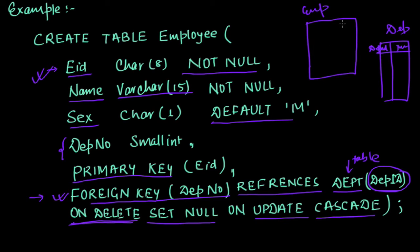Here this Department ID is referring to this. Now if I am updating, let's say ID one is CSE. If I am updating this value CSE, then update will be cascade. Let's say here for a record we have one, and this is referring to this value.